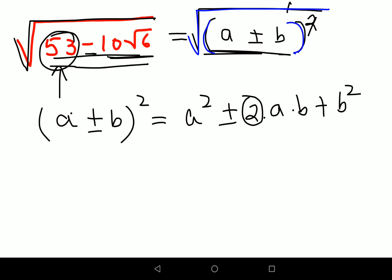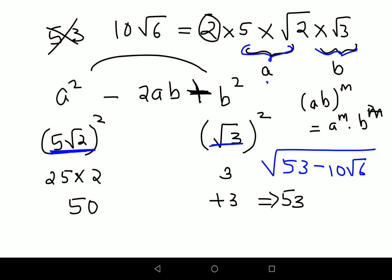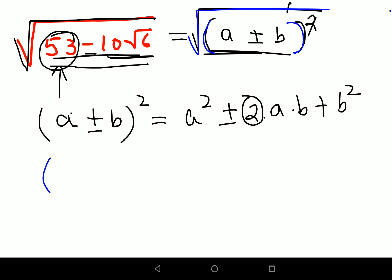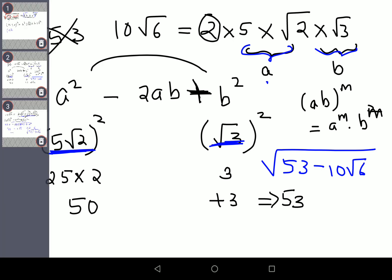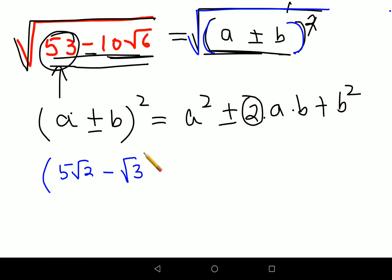This was just a very basic thing which you need to remember. So your a is nothing but 5 root 2, so I will say 5 root 2 minus b, b was your root 3, so I'll write minus root 3 the whole squared. Now let's try and do the expansion.